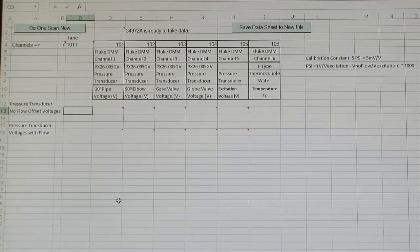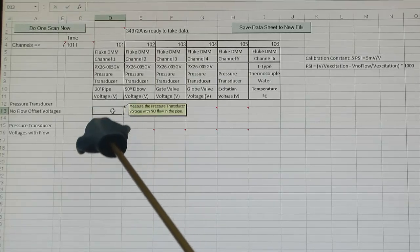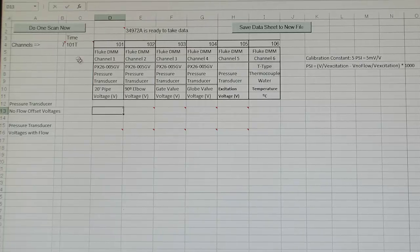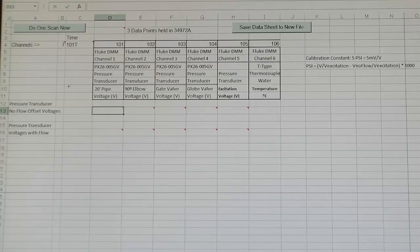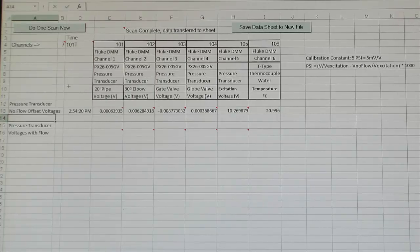To start off, we will record the no flow offset levels of the pressure transducers. To do this, highlight cell D13 in the Data tab. With no flow going through the pipe, press the Do 1 Scan Now button. The computer is going to read the pressure transducer offset voltages and place them into the spreadsheet.